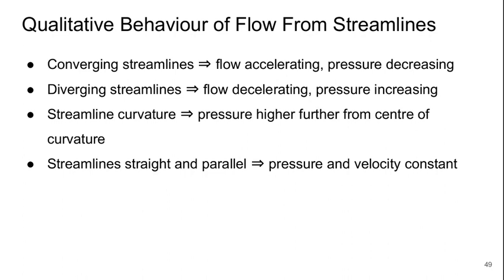Let's look at qualitative behavior of flow. Basically we can look at four things. If the streamlines in the direction of flow are getting closer together—they're converging—that means the flow is accelerating and the pressure is decreasing. If the opposite is occurring and the streamlines are diverging, then the flow is decelerating or slowing down and the pressure is increasing. If the streamlines are curving, it tells us that the pressure is higher further away from the center of curvature. And if the streamlines are straight and parallel, it tells us that the pressure and velocity must be constant. Remember this is all for potential flow.